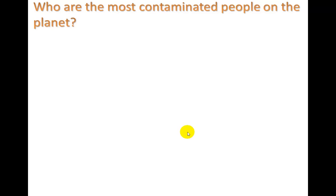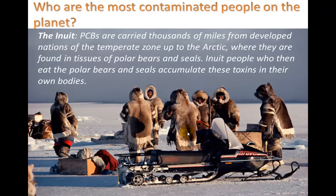So who are the most contaminated people on the planet? It's maybe an unexpected answer. You might think it's people living in industrial areas, but actually it's quite the opposite — it's the Inuit, the Native Americans of northern North America, the Arctic region. PCBs, a type of chemical used mostly in the electronics industry, are carried thousands of miles from developed nations of the temperate zone up to the Arctic, where they're found in tissues of polar bears and seals. Inuit people who eat polar bears and seals accumulate these toxins in their own bodies, yet have the highest concentration of many of our most toxic chemicals.